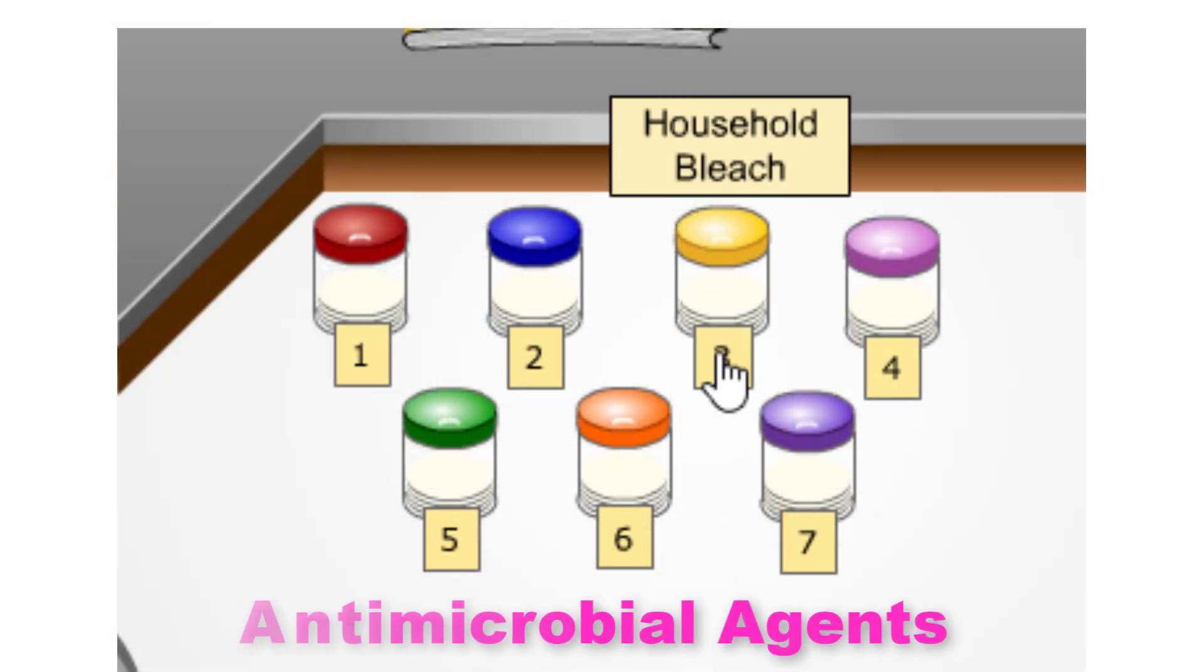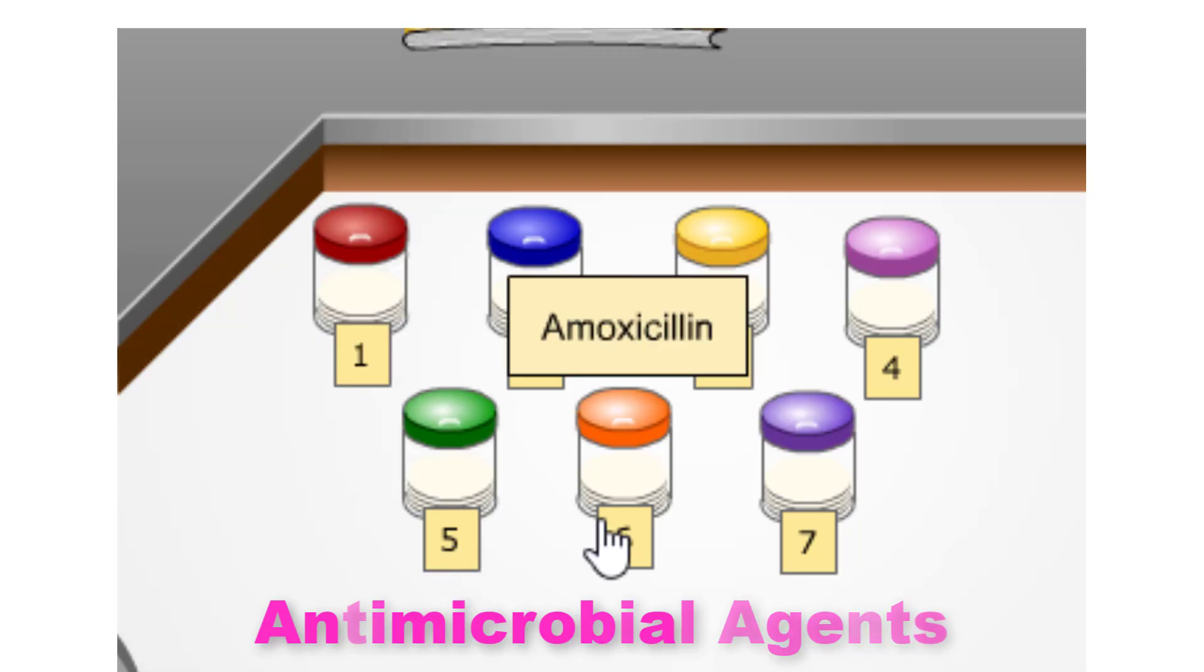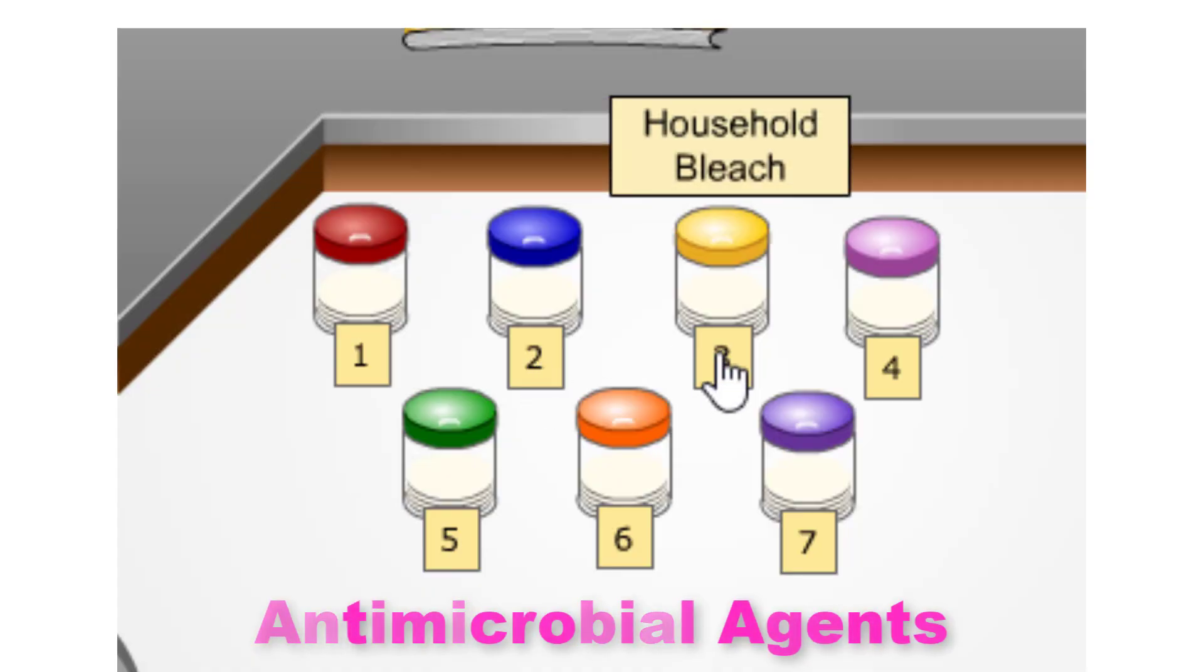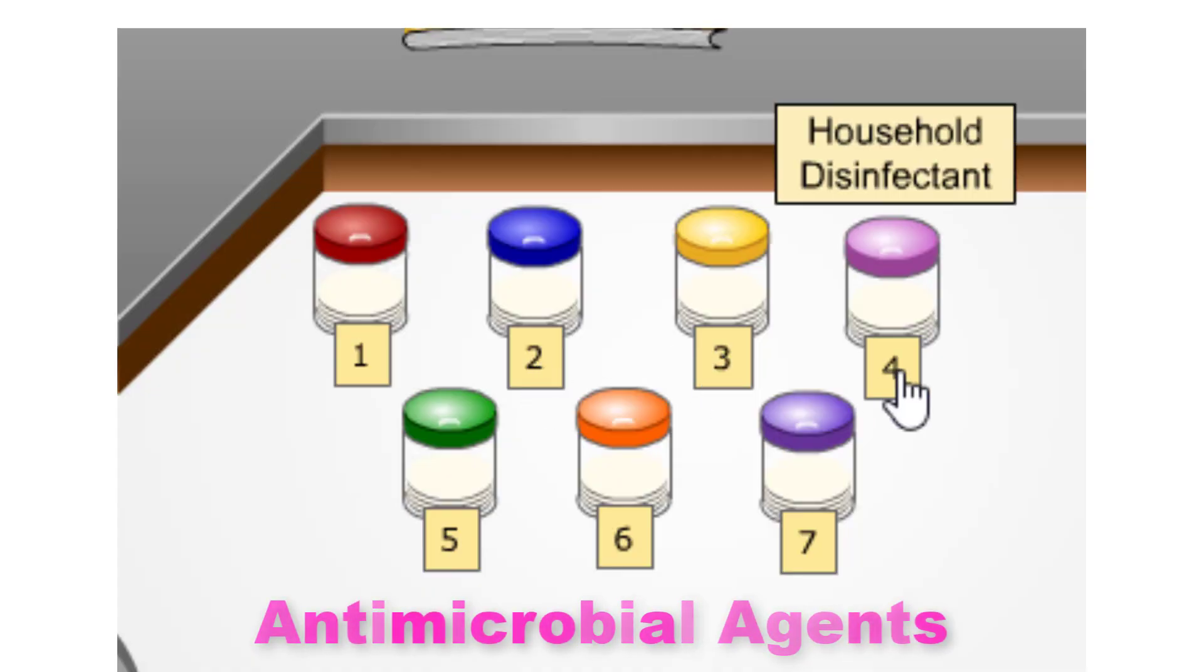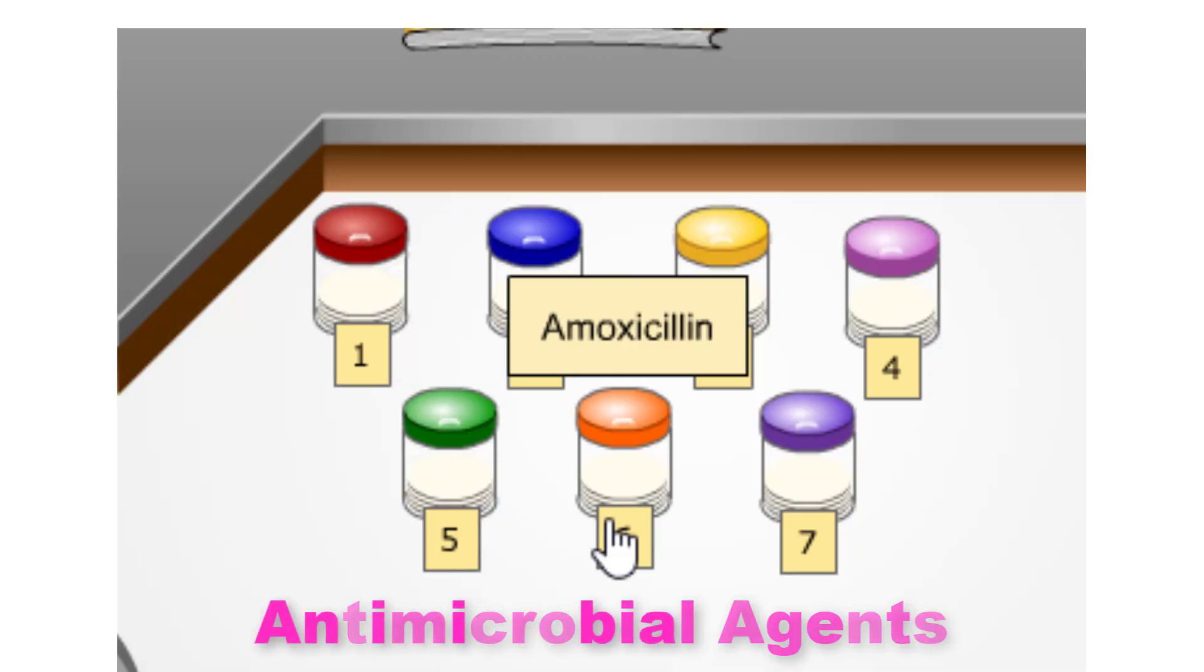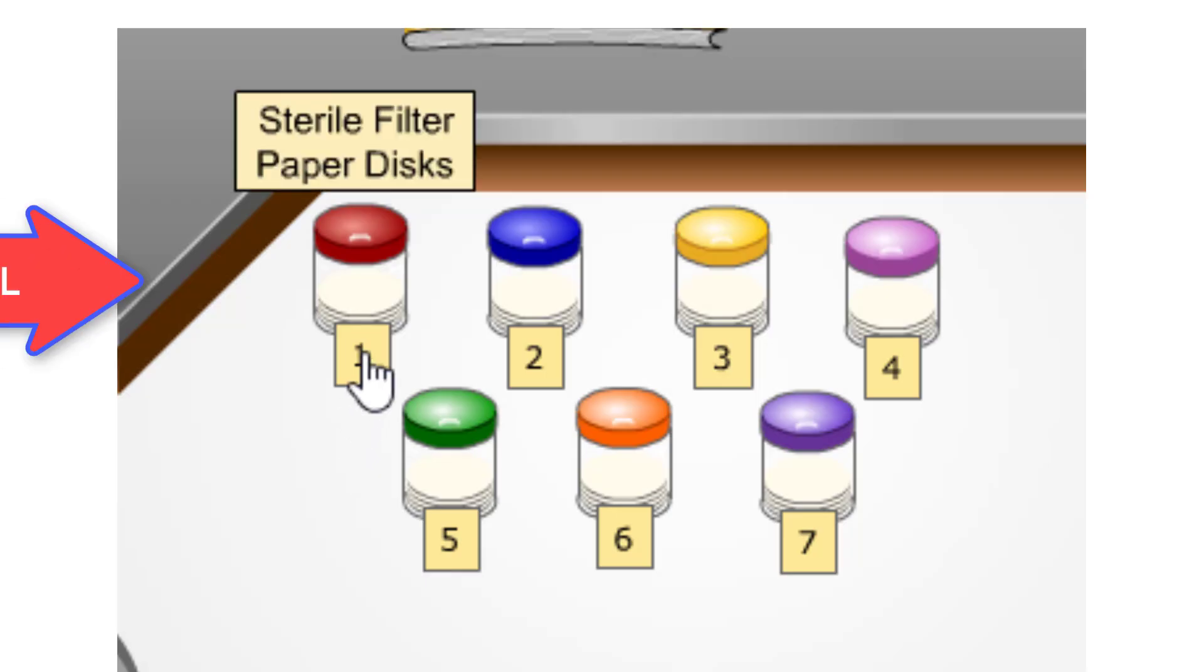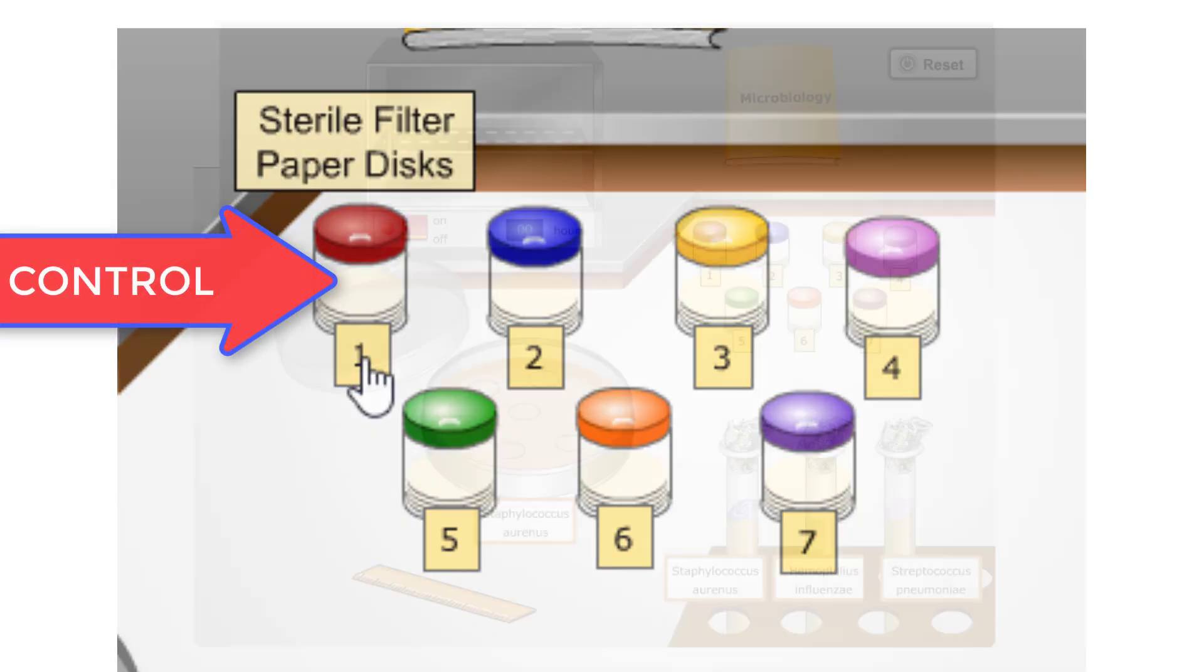Vials 1-7 contain filter discs that have been soaked in various antimicrobial agents such as antibacterial soap, household bleach, household disinfectant, penicillin, amoxicillin, and erythromycin, or sterile water used as a control.